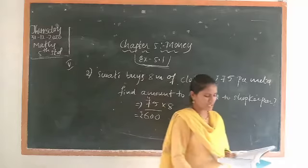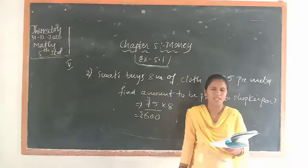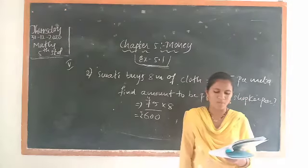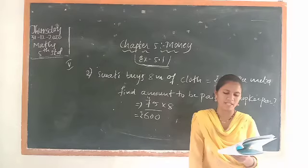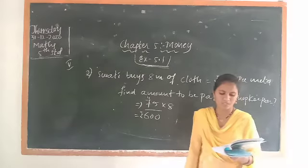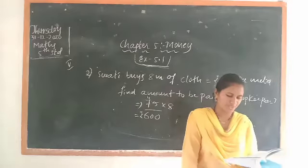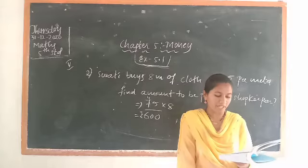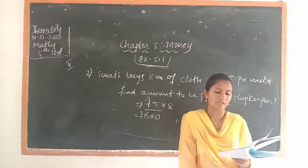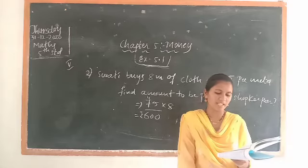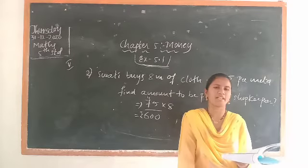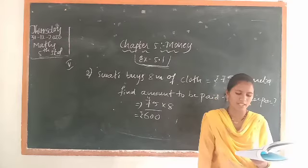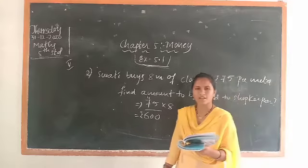In the third question, the cost of an umbrella is rupee 225. What is the cost of 15 umbrellas? We have to multiply 15 into 225 and you will get the value. In the fourth question, a labourer earns rupee 525 a day. How much will he earn in a week? One week is equal to 7 days. Multiply 525 into 7 and you will get the value.